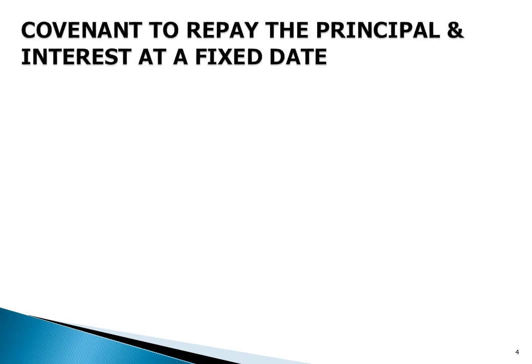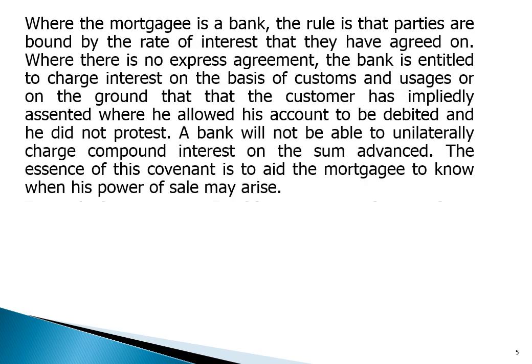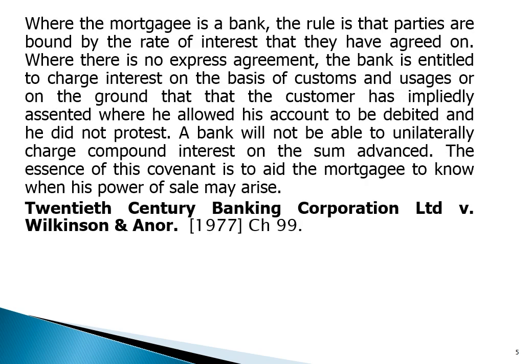Covenant to repay the principal and interest at the fixed rate: the mortgage sum is the principal amount advanced to the mortgagor by the mortgagee, while the interest is the sum accruing on the principal over a period of time. This covenant must be clear in the deed of mortgage. Parties should have applied their minds to what the rate of interest will be. Where the mortgage is a bank, the rule is that parties are bound by the rate of interest they have agreed on. Where there is no express agreement, the bank is entitled to charge interest on the basis of customs and usages, or on the ground that the customer has lightly assented and allowed his account to be debited without protest. A bank would not be able to unilaterally charge compound interest on the sum advanced.